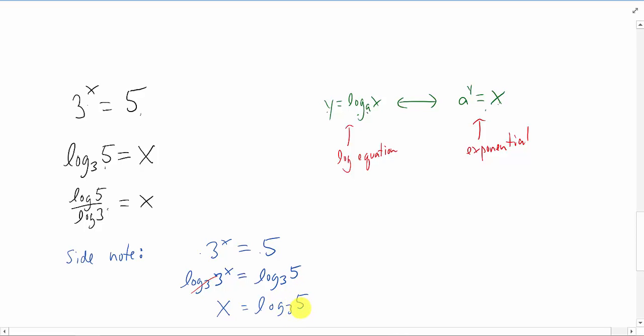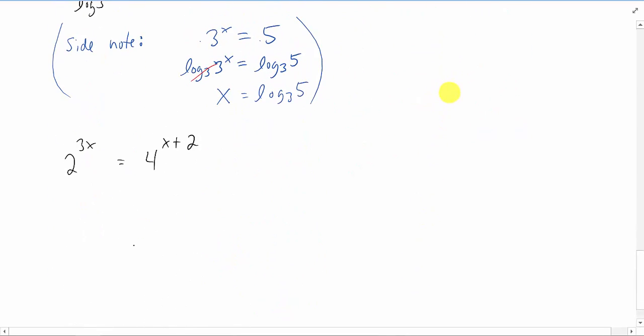What that leaves is just the x on the left side and you get log base 3 of 5 on the right side and that's the exact answer we got previously. So again, that's a little more algebraic way to do it. You can do it however you like of course. I just wanted to throw that out there. Okay, let's look at another example.